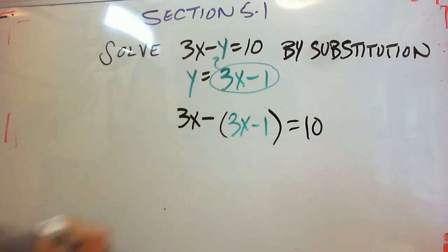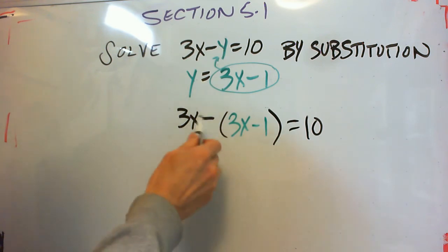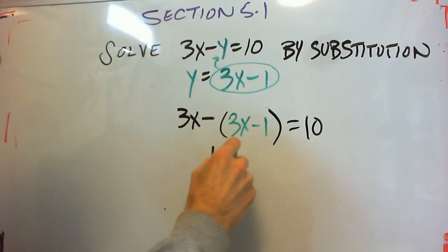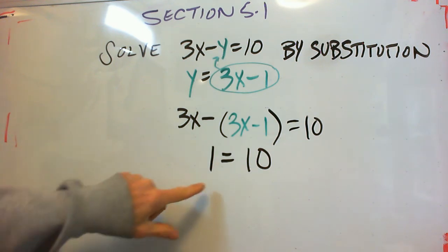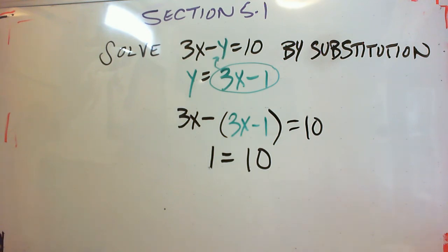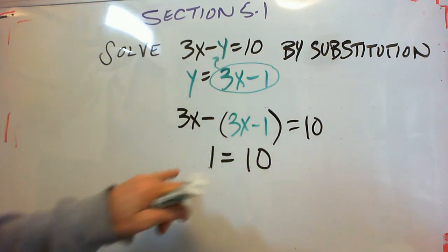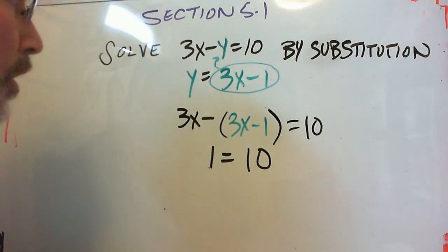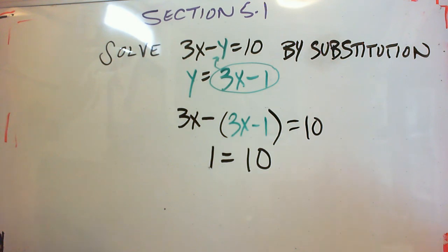Well, when we remove those parentheses, the 3x minus 3x is just 0x's. We're subtracting a negative 1 which makes positive 1 equals 10. And uh-oh, spaghetti-o, what do we have here? We have a contradiction. How can 1 equal 10? Well, it's impossible. Whenever you get this kind of thing happening, what it means is you have two lines that are parallel. They never intersect. And when you try to solve by substitution, you get this contradictory statement. That means there is no solution.